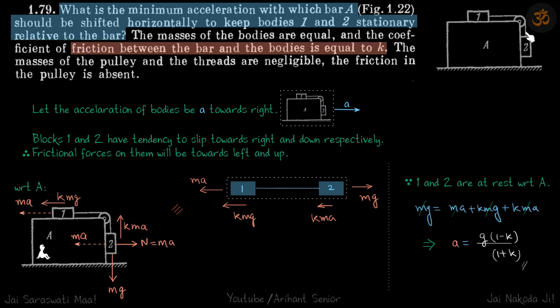You see, the 2 has a tendency to fall down and to avoid that we need some tension in the string. So that will happen if we have some pseudo force on 1 towards left. That means the real acceleration of the bigger mass should be towards right.